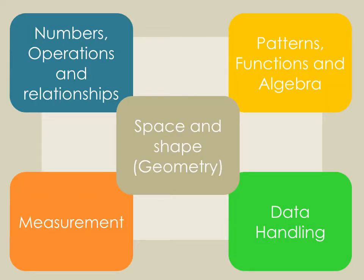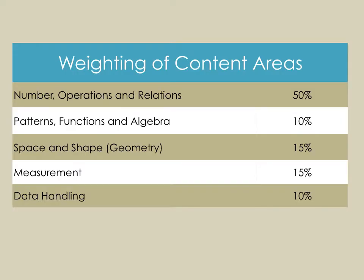Mathematics has five different sections, and each of these content areas is weighted differently. You'll notice the same for grades four, five, and six: Numbers, Operations, and Relations is the most heavily weighted at 50%, followed by Patterns, Functions, and Algebra at 10%, Space and Shape at 15%, Measurement at 15%, and Data Handling at 10%. This weighting influences the amount of time we spend on each area as well as the focus in assessments.